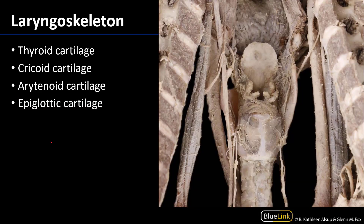Now when we look at the laryngoskeleton from a posterior view, we can see a completely different perspective. Just for your own knowledge, the cervical spine has been cut — there's one side of it and there's the other side — and it has been reflected out laterally, open almost as if it were a book.